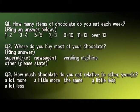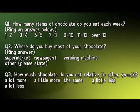The survey she filled in asked the following questions. Question 1: How many items of chocolate do you eat each week? Question 2: Where do you buy most of your chocolate - in the supermarket, in a newsagent, in a vending machine, or other? Question 3: How much chocolate do you eat relative to other forms of confectionery? Using the scale below, identify the response which best reflects your opinion. So, Valentine uses this example of chocolate consumption to illustrate some of the limitations of a survey approach for the sort of knowledge she was interested in.